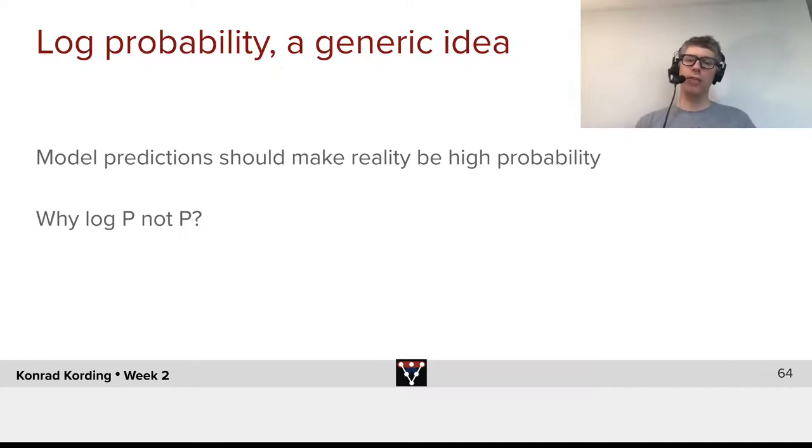However, probabilities tend to be, they are always between zero and one. And many times probabilities are very close to zero or very close to one. If we thus used probability, we might have vanishing gradients. If we use log probability, it maps these probabilities in a much more meaningful way. And therefore, we can implement it more readily on the actual systems that we actually use.